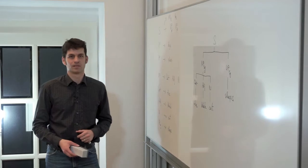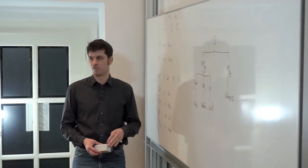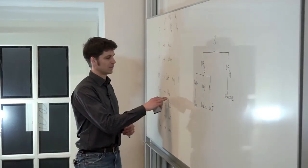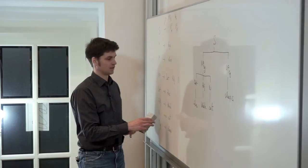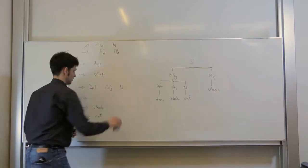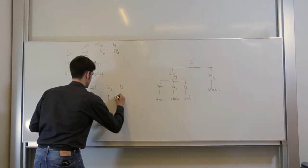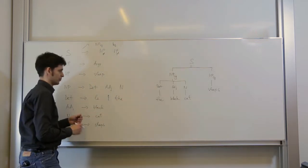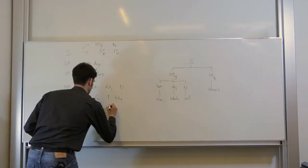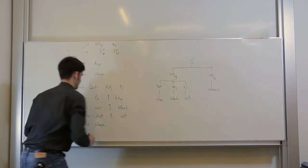To capture the translational equivalents, we need to change our context-free grammar to a synchronous one. So instead of just one right-hand side, we'll have two. The determiner is le in French and the in English. And similarly for other rules. Black is noir and cat is chat.